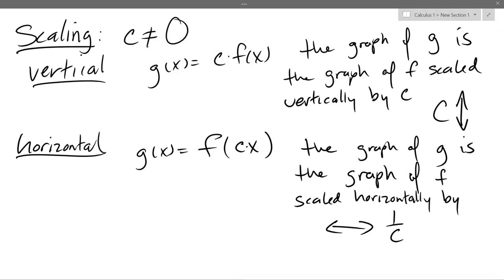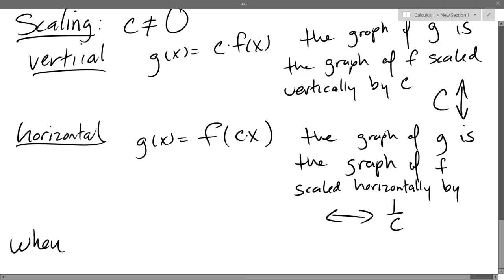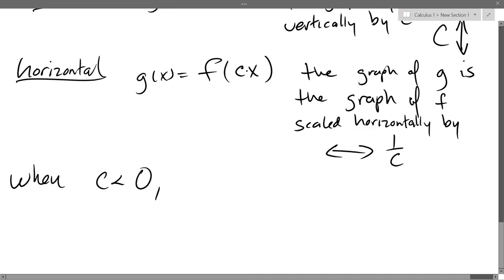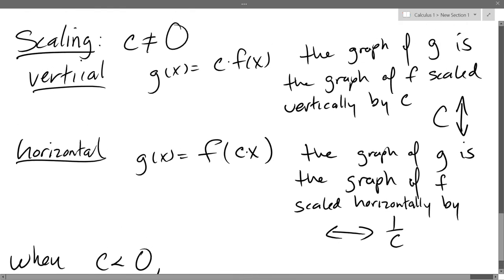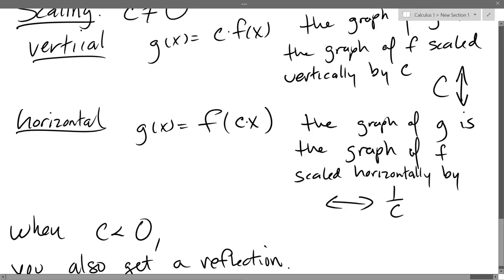Yeah, so in either case, if c is negative, you don't just get your stretch or your scale, but it will flip it as well. So when c is less than 0, you also get a reflection. Now, why was I careful to say that c was not 0? What happens in a vertical scaling if c is 0? It'll crush it down to basically the x-axis, so it's very boring. Horizontal's even worse. Technically, if you put 0 in there, you would also have a constant function as well. So it breaks down. It doesn't work with scaling by 0.